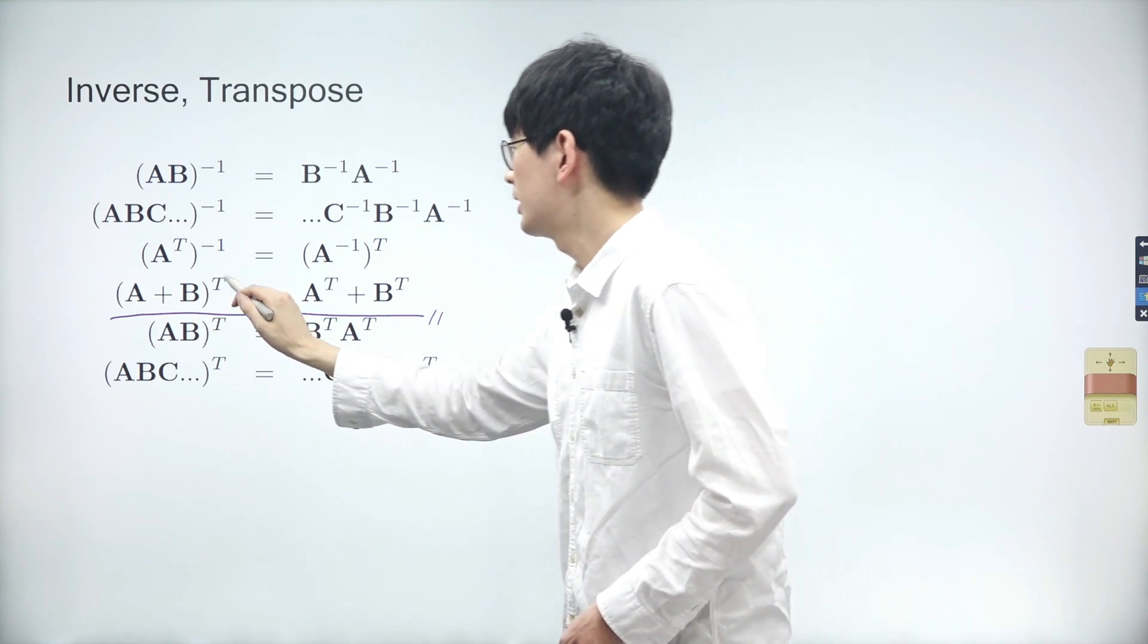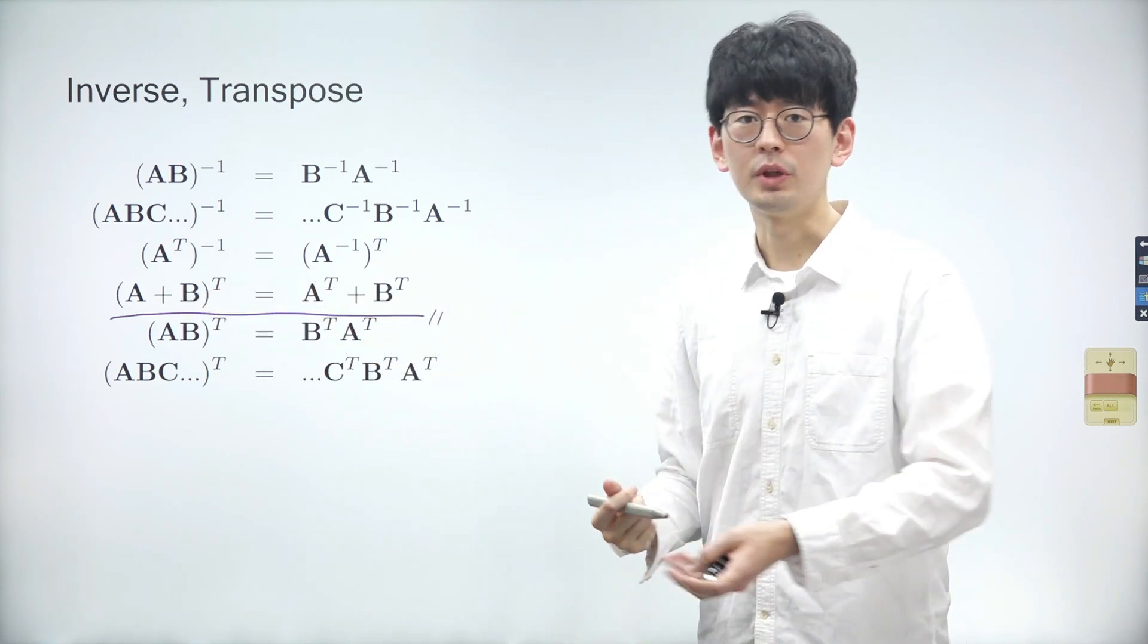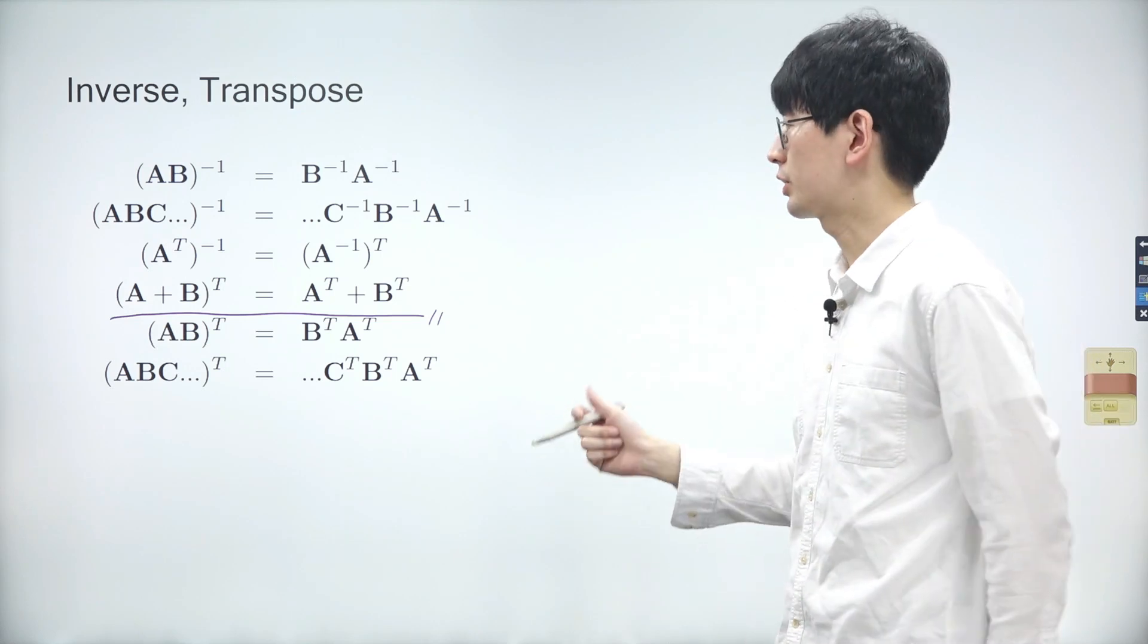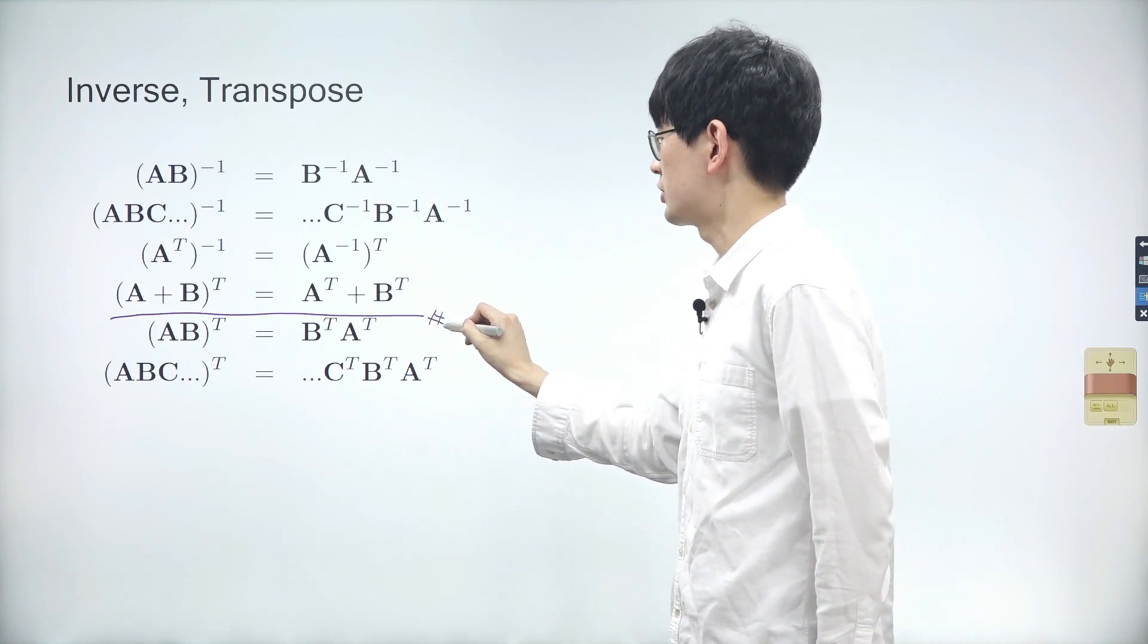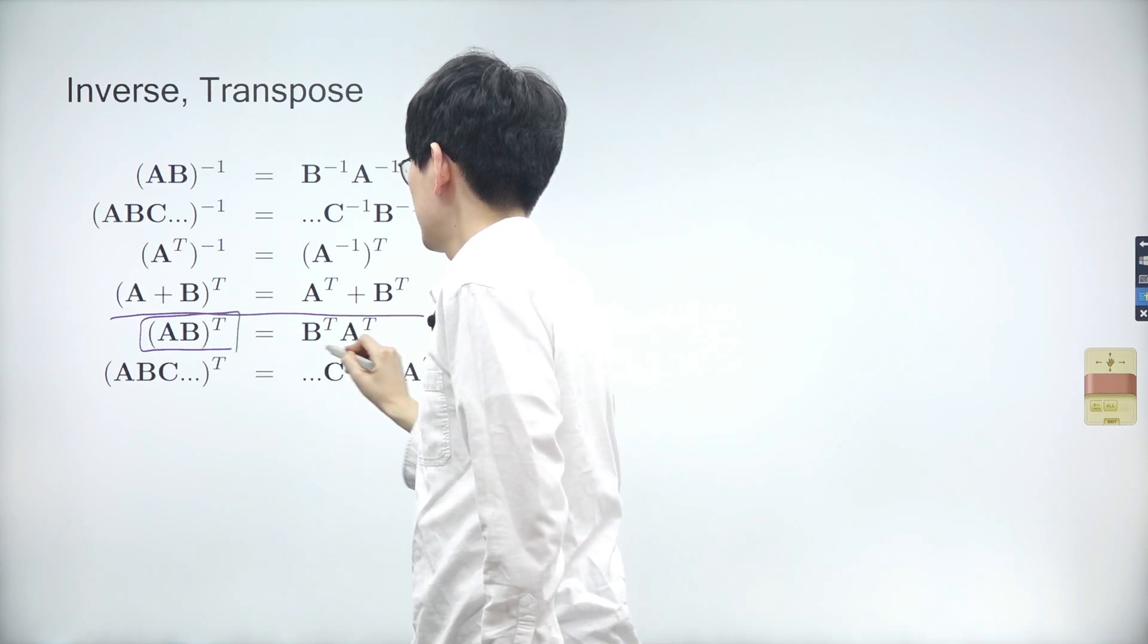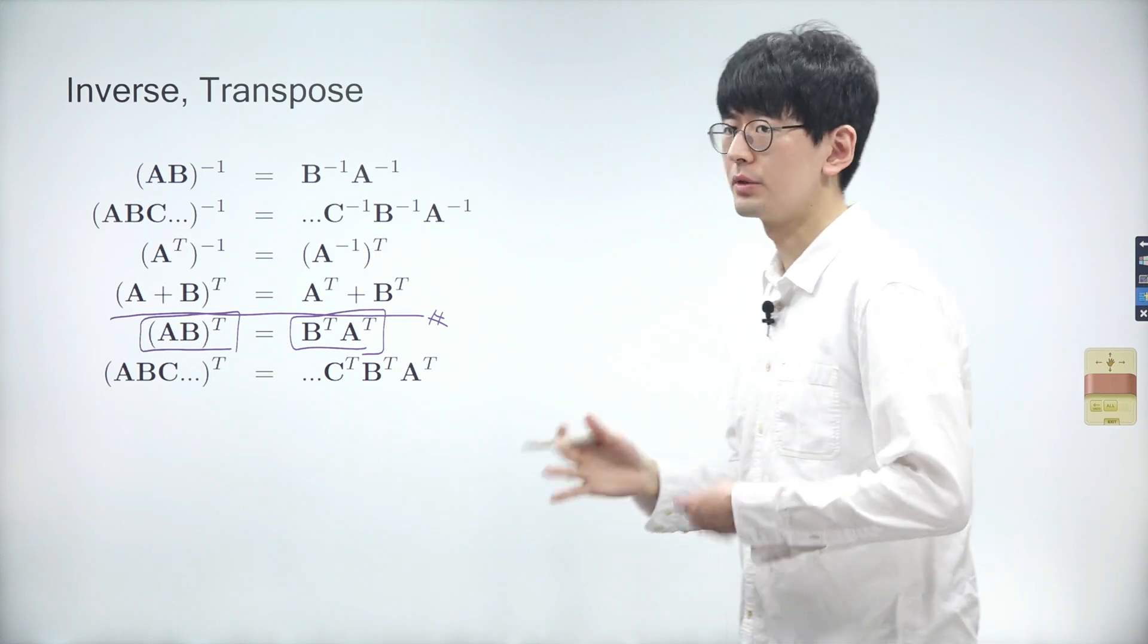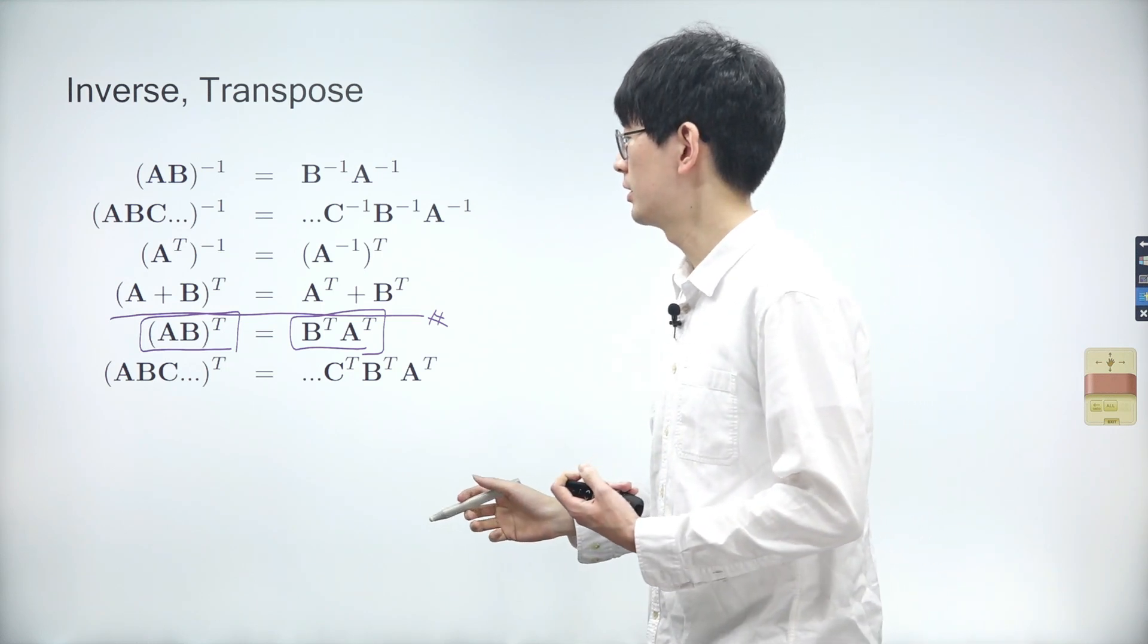The next property also involves the transpose of matrices. Adding matrices first and then transposing, or transposing first and then adding, leads to the same outcome. Additionally, similar to the inverse, the order of matrices is swapped when transposing the product of two matrices.